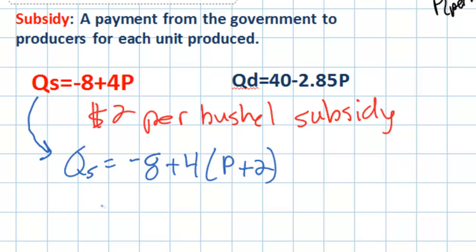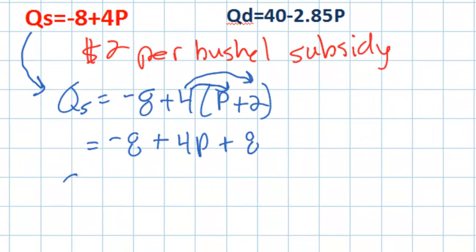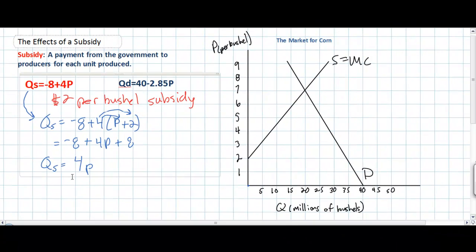We can simplify this equation very simply. We see that QS equals -8 + 4P + 8. The eights cancel each other out — we found +8 by multiplying 4 by 2. So the new quantity supplied equals 4P. We have a Q-intercept of zero, meaning that the supply curve will begin at the origin. At a price of zero, zero bushels of corn will be supplied.